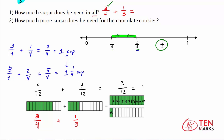13 twelfths can be rewritten as 1 and 1 twelfth. So the total amount of sugar required for both types of cookies is 1 and 1 twelfth cups. And 1 and 1 twelfth falls right between our two estimates — the low end of 1 cup and the high end of 1 and 1 fourth cups. So we had a good idea where the answer would fall, and then confirmed it with the models.